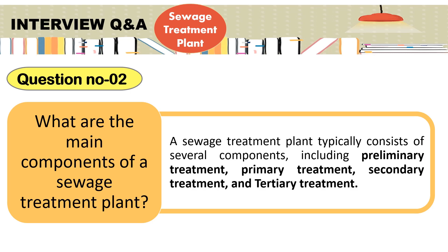This answer can be further expanded by explaining these treatments. In preliminary treatment, it involves bar screening and grit removal. Primary treatment involves the use of a primary clarifier. Secondary treatment involves the use of an aeration tank and secondary clarifier. And tertiary treatment involves filtration, disinfection and nutrient removal.